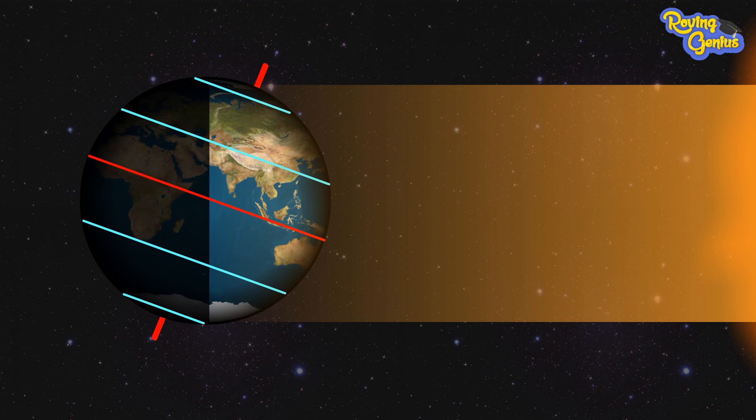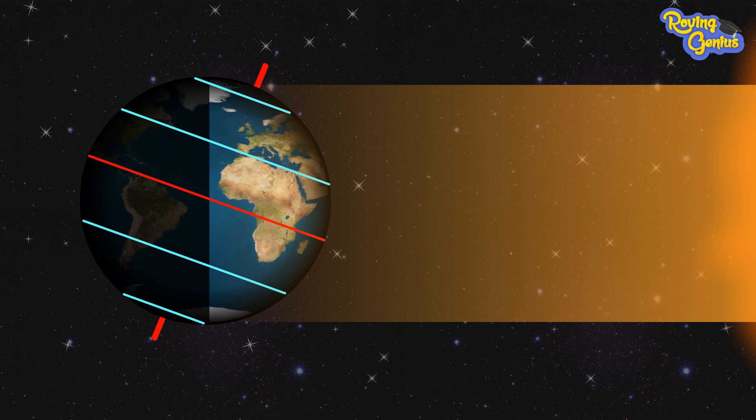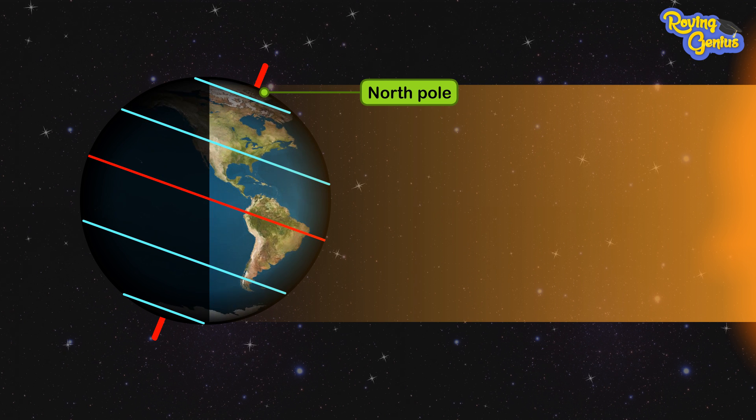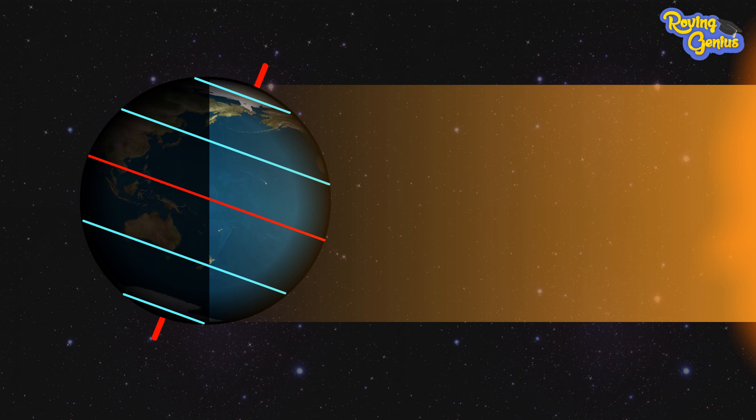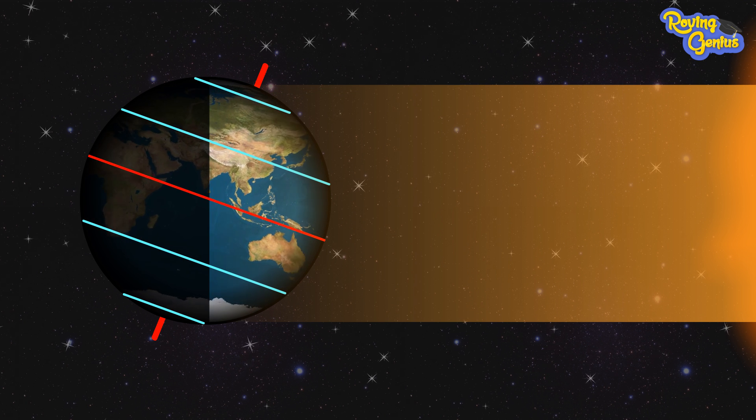During this journey, the North Pole is tilted towards the Sun for six months and away from the Sun for six months.